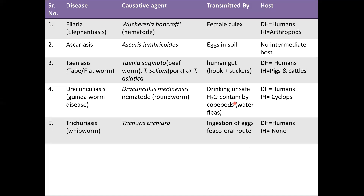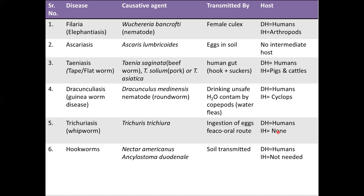Next is trichuriasis, which is caused by the whipworm. It is spread by the ingestion of eggs and is passed via the feco-oral route. If the feces of an infected person is ingested, the eggs present will cause an infection in the host. The definitive host is humans and there is no known intermediate host for this organism.